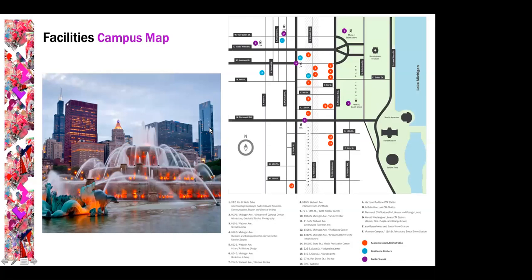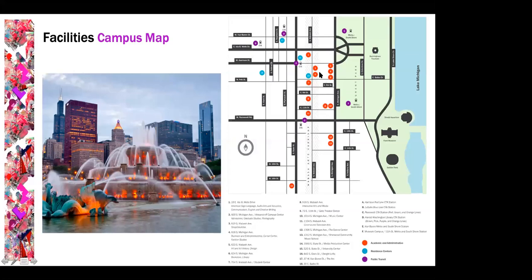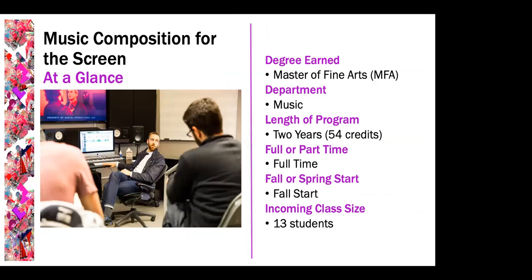Just to further contextualize where we're at, here's a picture of Buckingham Fountain. Behind it is the Willis Tower, formerly the Sears Tower. If you follow my mouse, right over here is essentially where campus would be. Here's Lake Michigan, Buckingham Fountain, Soldier Field, the Field Museum, Shedd Aquarium. This colored rectangle is about two city blocks wide and about a mile north to south — that's where the majority of Columbia's campus is. All the purple dots represent public transportation, so we're easy to access. That's enough about the school as a whole — let's talk about music composition specifically.